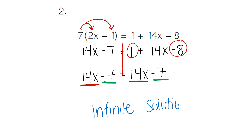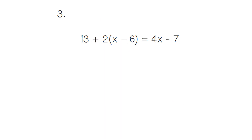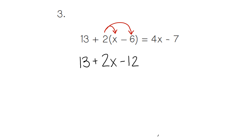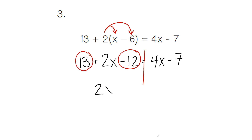We do not have to solve the problem further. Once you recognize the infinite solution, you can stop. For number three, we would start with our parentheses, meaning we multiply. The 13 stays out front. 2 times 1x gives us 2x, and 2 times 6 gives us 12. Then we have equals 4x minus 7. We solve by combining like terms — 13 and negative 12 give us a value of 1. I notice that the x values are different: 2x plus 1 versus 4x minus 7. Everything is different, meaning we have a one solution.